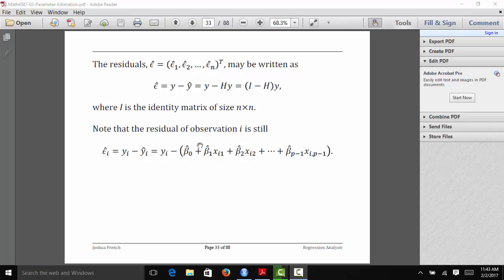Now that we have computed the fitted values, we can compute the residuals, which we'll denote in matrix notation as epsilon hat. Epsilon hat is that vector that includes epsilon 1 hat, epsilon 2 hat, up to epsilon n hat. We can write epsilon hat as y minus y hat, responses minus the fitted values. Because y hat equals Hy, we can write that as I minus H times y, where I is the identity matrix of size n-by-n.